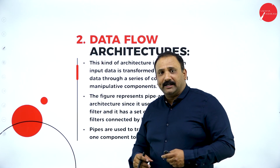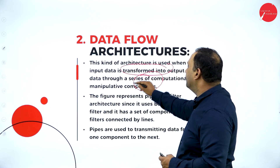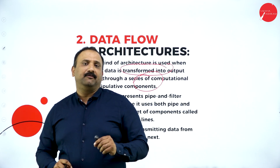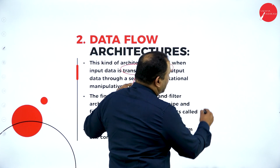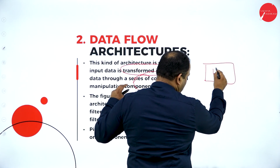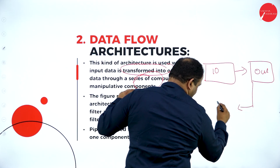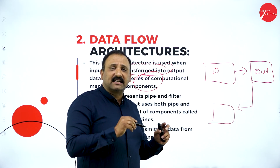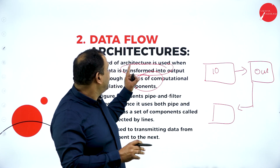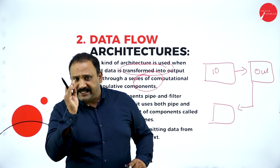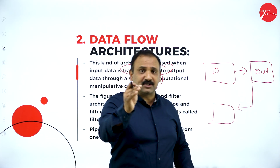The data flow architecture is used when input data is transformed into output data through a series of computational and manipulative components. For example, when I put in some values, that data has to get transformed into some output, and then give a process or feedback. The data is processed step by step, coming to the next level. This kind of data flow architecture is used when data flows from one point to another in a step-by-step method.